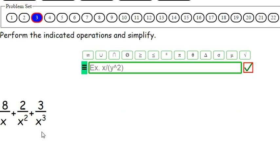Whoa, we got three of them. 3.1. So we have 8 over x plus 2 over x squared plus 3 over x cubed.